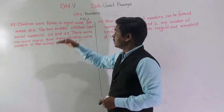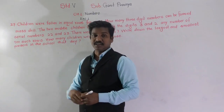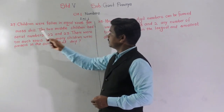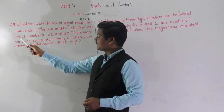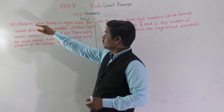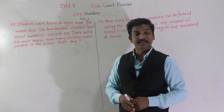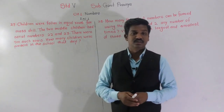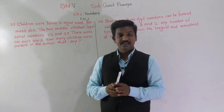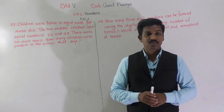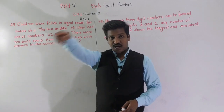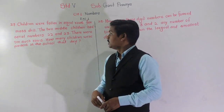Question number 27: Children were fallen in equal rows for mass drill. The two middle children had serial numbers 22 and 23. There were 10 such rows. How many children were present in the school that day? In each row there are equal number of children, and there are 10 such rows. We have to find the total number of students present.